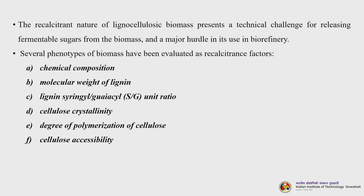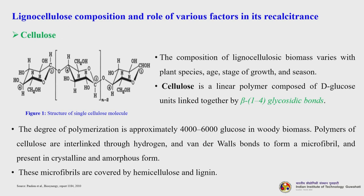Several phenotypes of biomass have been evaluated as recalcitrant factors. These include: chemical composition, molecular weight of lignin, lignin syringyl-guaiacyl units, cellulose crystallinity, degree of polymerization of cellulose and cellulose accessibility. Cellulose is one of the most evidently available natural materials on earth, and the composition of lignocellulosic biomass varies with plant species, stage of growth and season.